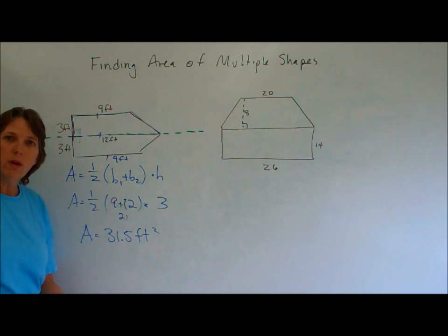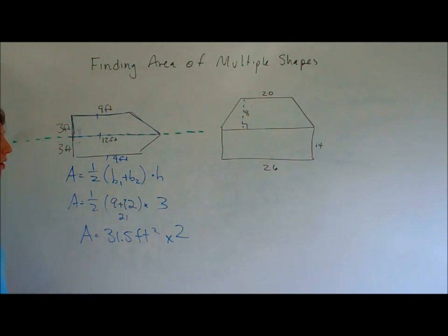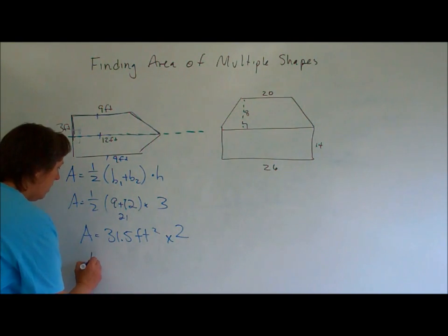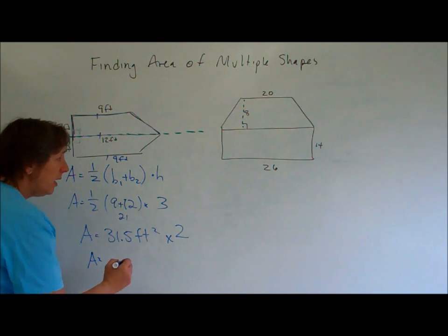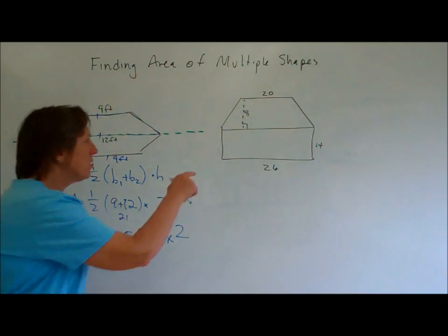How many do we have? Two. What are we going to do? Multiply it by two. That's how I show my work. And then the total area of the pentagon is sixty-three feet squared.